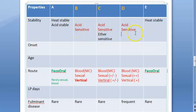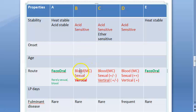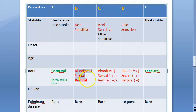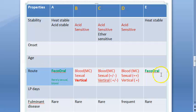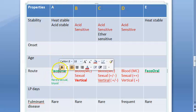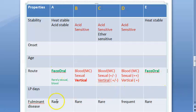B, C, and D are acid sensitive, meaning acid can destroy these viruses. Regarding route of transmission, B, C, and D — since B is called serum hepatitis — can be spread via sexual transmission, vertical transmission (parent to child), parenteral route, and contact with blood. A and E are transmitted via the feco-oral route; A can rarely be sexual, but mainly feco-oral.